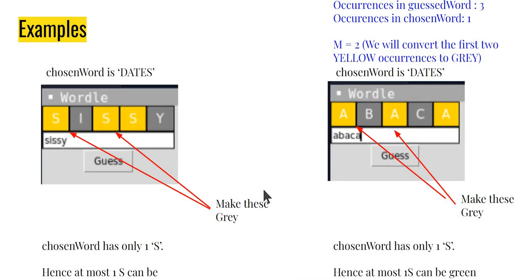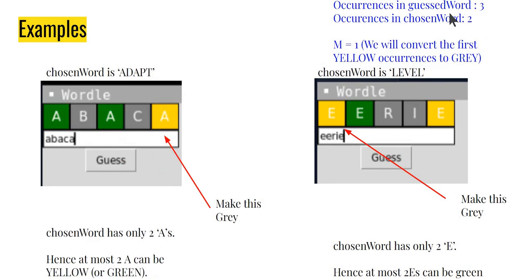Let's take another example where m equals two — three occurrences in the guess, one in the chosen word, so the difference is two. I convert the first two yellows to gray. For a case like three S's in the guess with one S in the chosen word, I make the first two S's gray — leaving only one S, which is the correct single occurrence in the final word. Likewise for 'abaca' — three A's in the guess with one A in the chosen word — I convert both extra ones to gray, solving the problem.